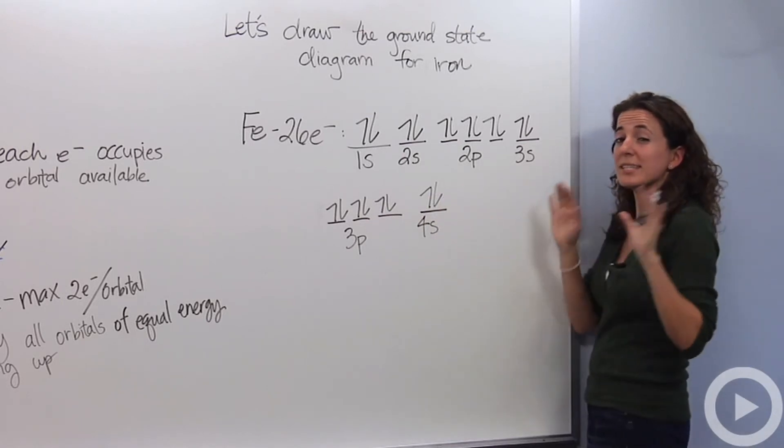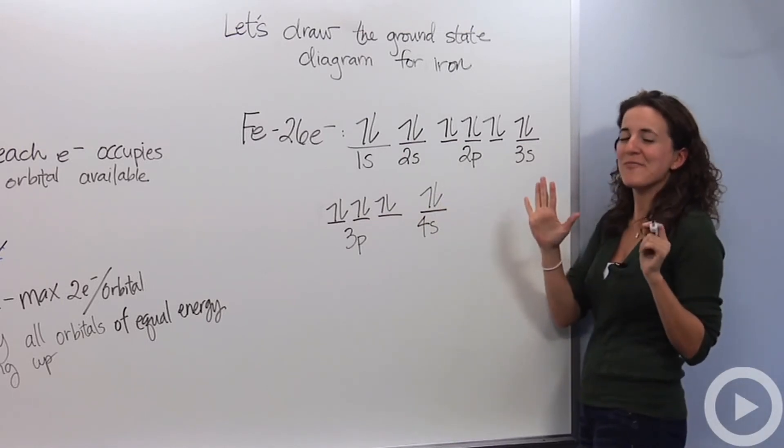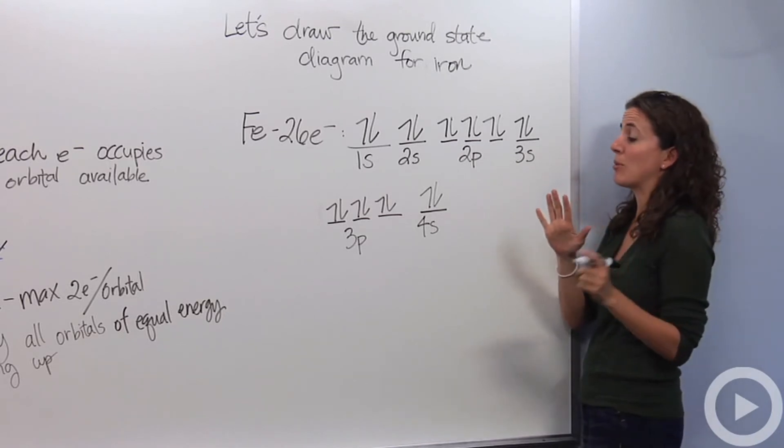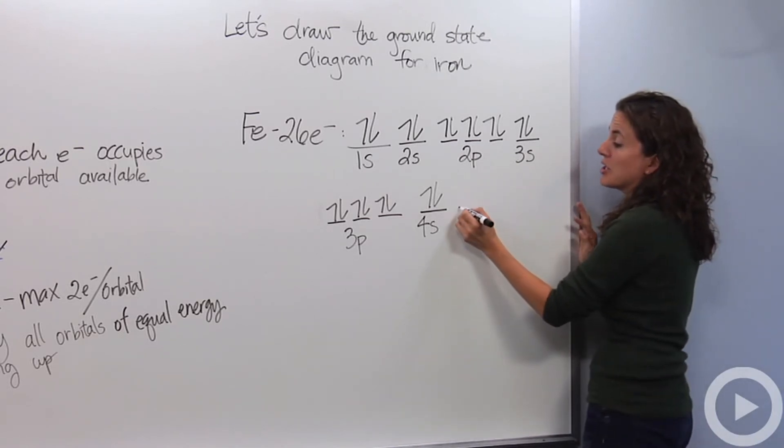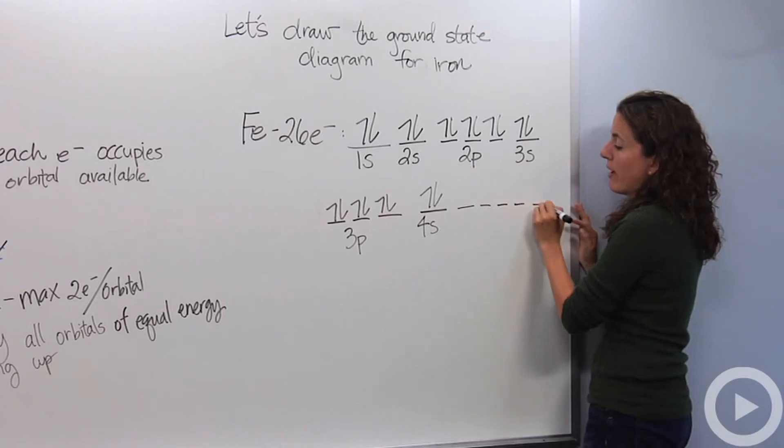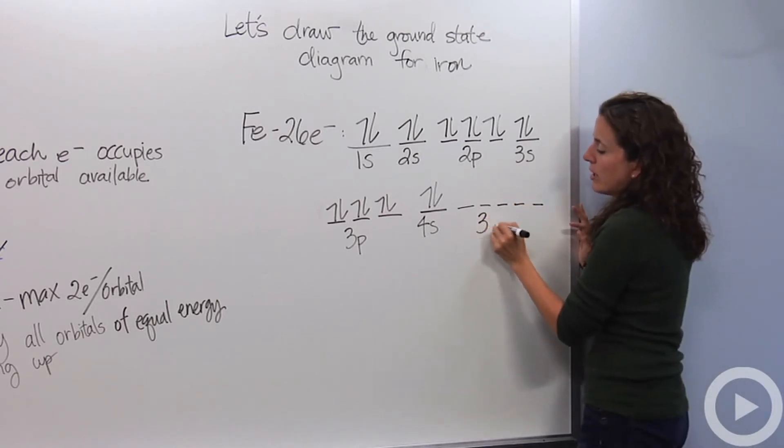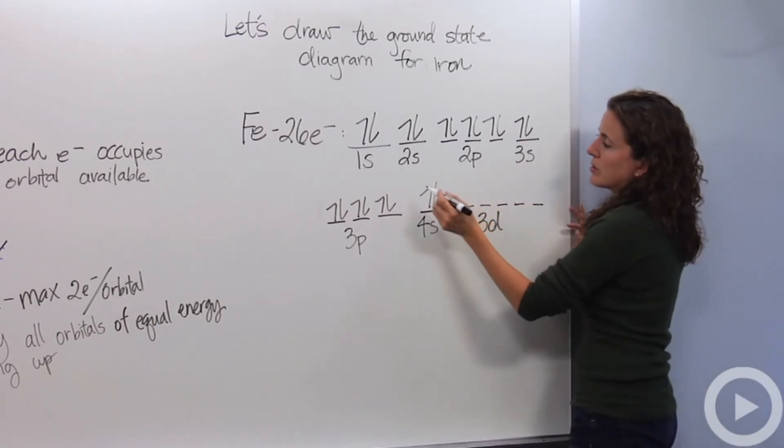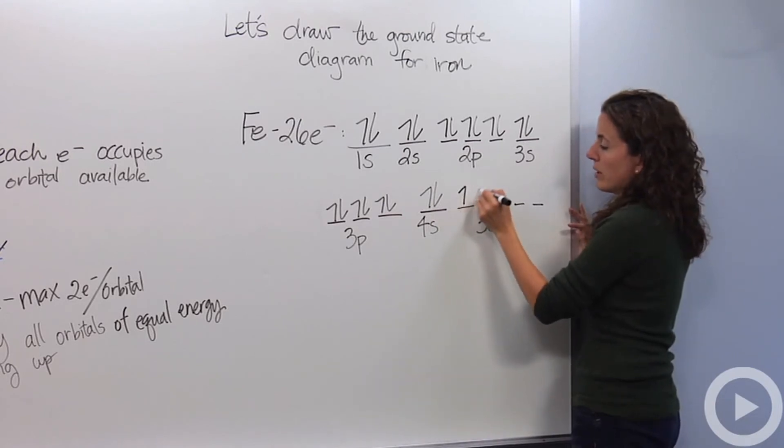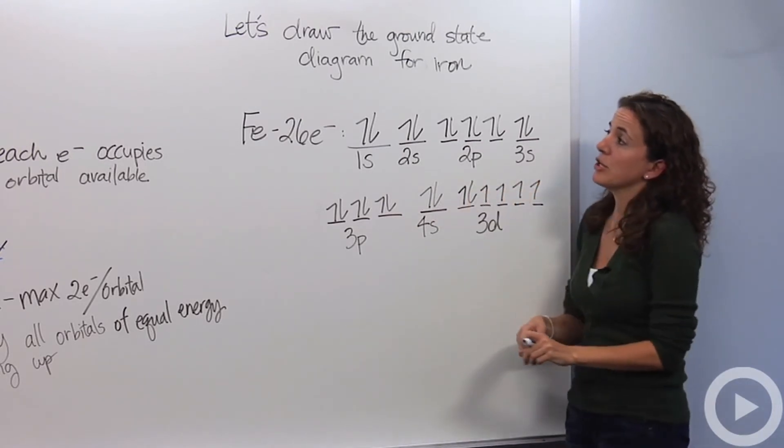The next one is 3d. The d has 5 orbitals. It's all the same energy. So we're going to draw 5 dashes: 1, 2, 3, 4, 5. All are the 3d. So we're going to draw, I need 6 more. So 1, 2, 3, 4, 5, 6. And this is how you draw orbital diagrams.